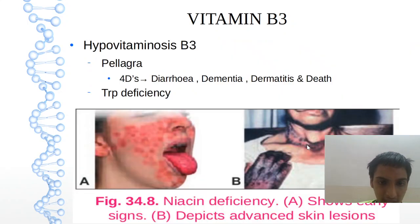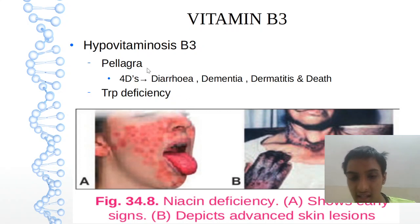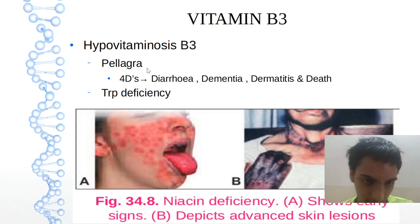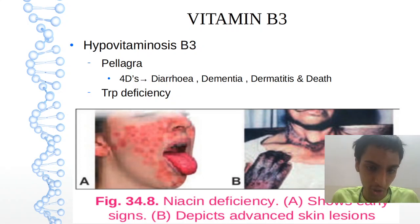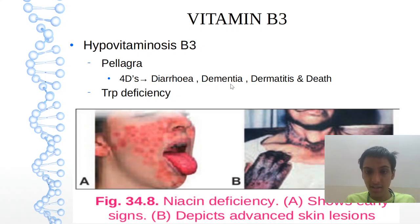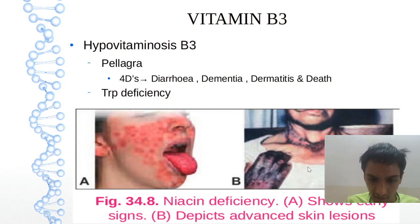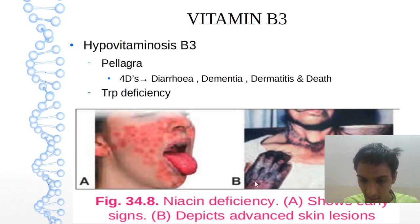The applied aspect: niacin deficiency causes pellagra, which is also related to tryptophan deficiency — niacin is also produced via the kynurenine pathway from tryptophan. Remember the 4 Ds of pellagra: Diarrhea, Dementia, Dermatitis, and Death. In the image you can see niacin deficiency signs — the tongue is swollen with lots of fissures, and early skin lesions are visible.